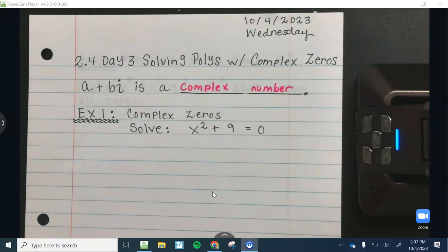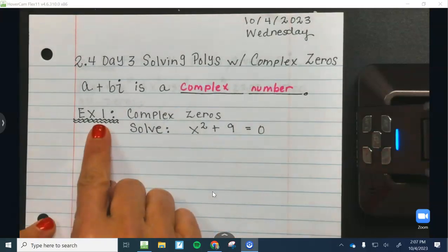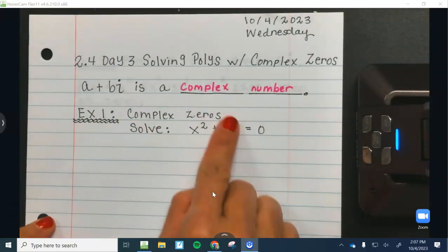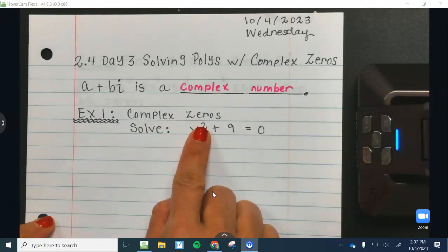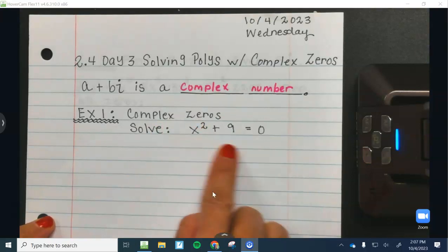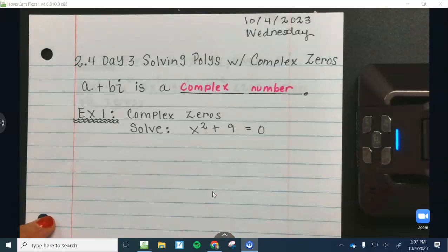So let's talk about what a complex zero looks like. This is kind of a review from yesterday, but we're just going to do it all over again. So for example 1, we're going to review what a complex zero is. Please write down this equation. We're going to solve it together.